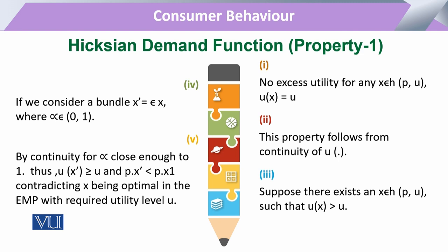The continuity of the utility function is the basic essence to have the substitution effect. Coming to the third property: if there is a commodity X that is a member of the Hicksian demand function, and the utility of that X is greater than the previous utility U-dot, then we proceed to the next consideration.